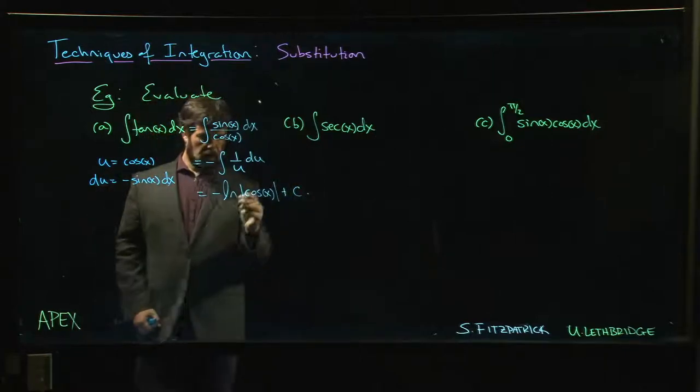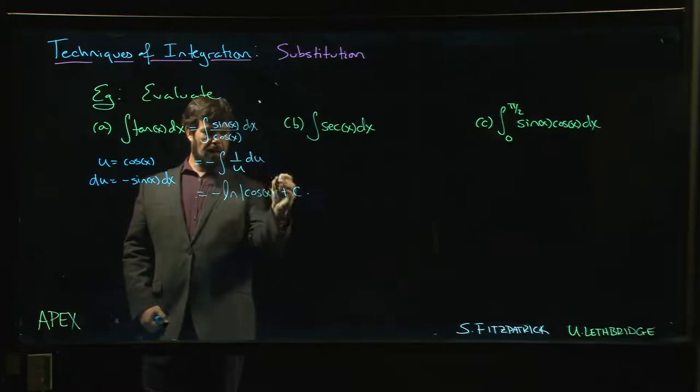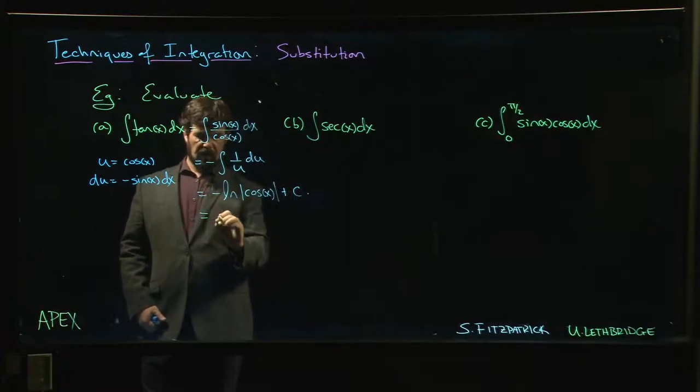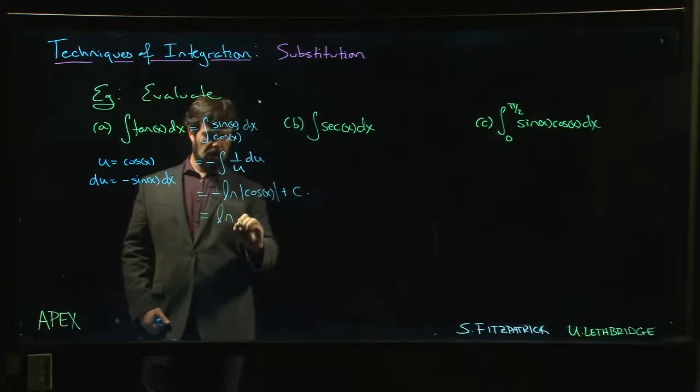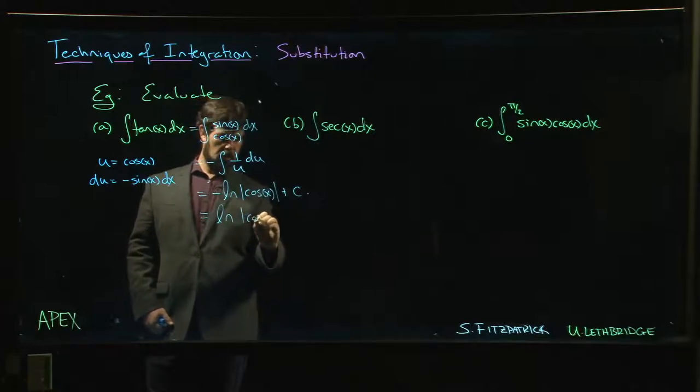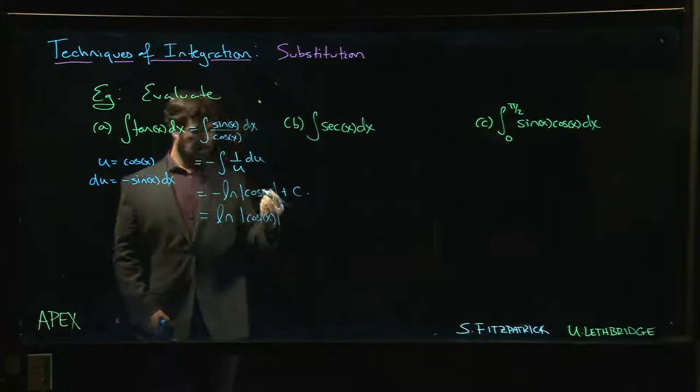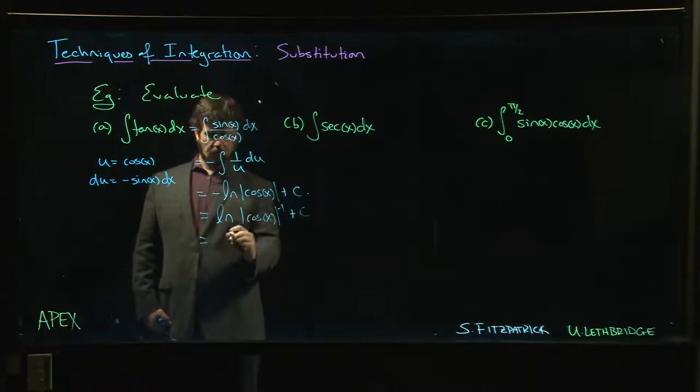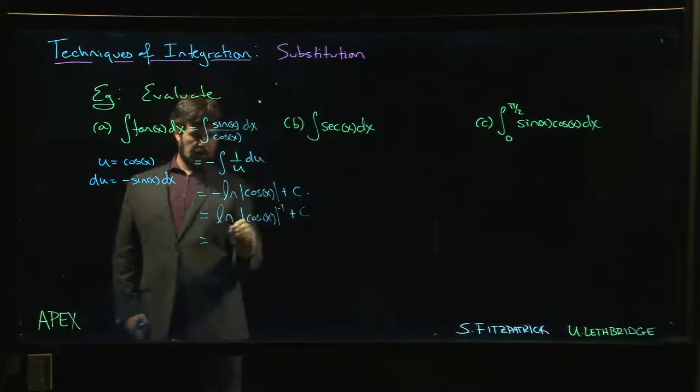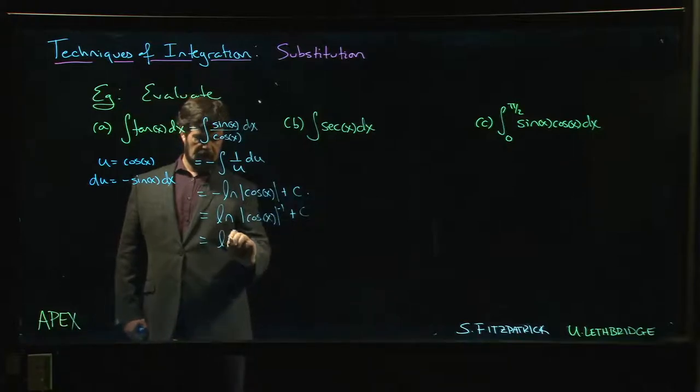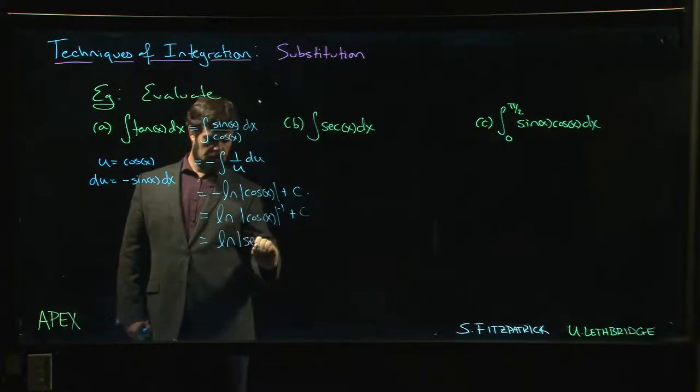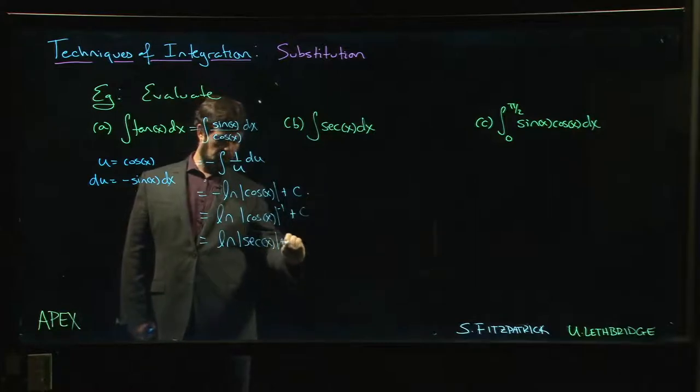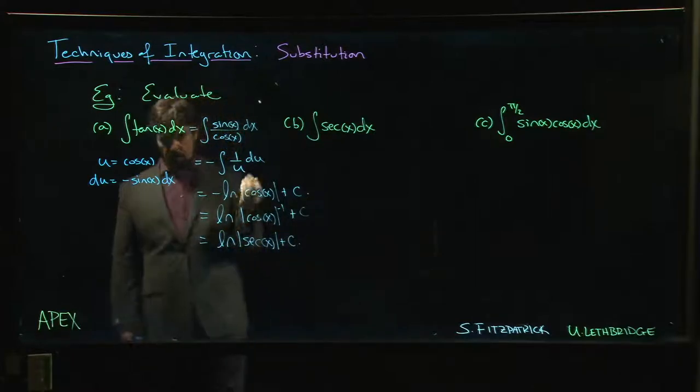If you like, leave it there. Or we could move that minus sign up. We could say this is like the natural log of the absolute value of cos x to the minus 1, right? Take the reciprocal. But we know what the reciprocal of cos is—the reciprocal of cos is secant. And 1 over the absolute value, it doesn't matter whether the absolute value is inside or outside. So we can write that as the natural log of secant of x plus C, and then you don't have the minus sign out front.